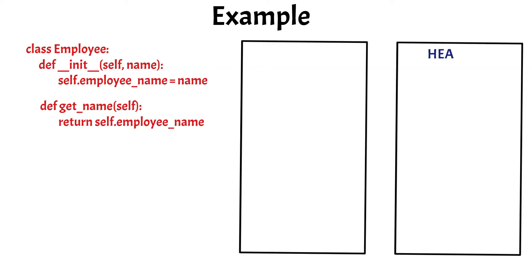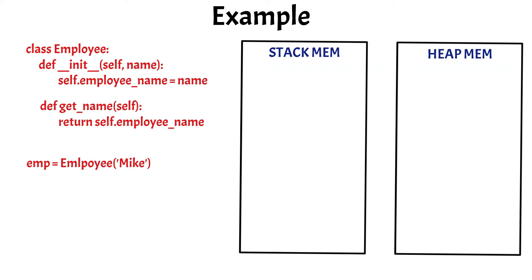So here we have our heap memory and the stack memory. We create an object of the class Employee with the name Mike, so we can write: emp = Employee('Mike'). When this code is executed, the main stack is created in the stack memory, and inside the main stack, the variable emp is created.